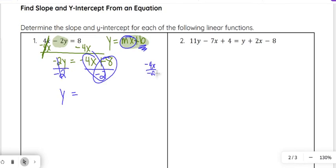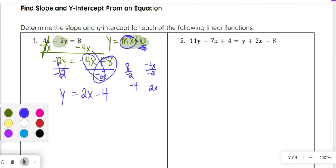-4x divided by -2, negative divided by negative will be positive, and 4 divided by 2 is 2. So that gives me 2x. Then 8 divided by -2 is -4. So 2x - 4 is what we get on that right side.